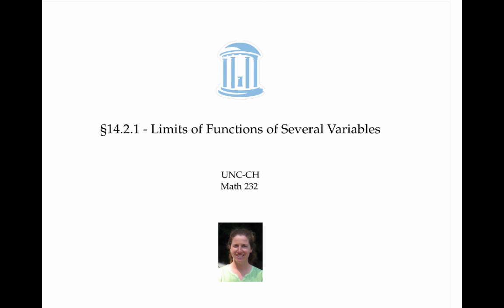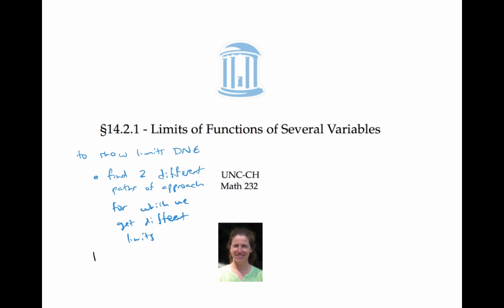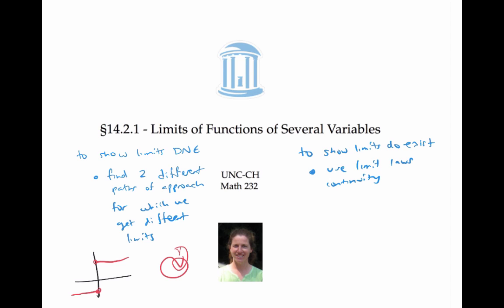In this video, we worked out several examples where limits did and did not exist for functions of several variables. The main trick to show a limit does not exist was to find two different paths giving different limits — analogous to the calculus one case of left and right limits differing. To show limits do exist, we used limit laws, continuity and direct substitution, or polar coordinates, which reduces the problem to a single-variable calculus problem with just r heading toward zero.